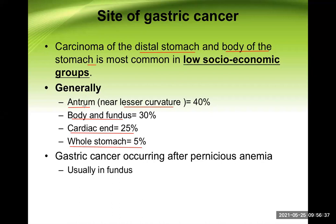The most common site is the antral area. If a big mass is present in the antral area, it can easily lead to obstruction — gastric outlet obstruction. Gastric cancer occurring after pernicious anemia usually occurs in the fundic area.